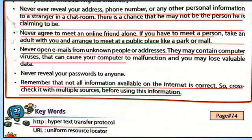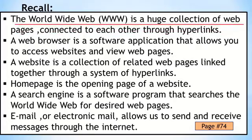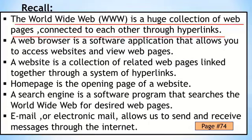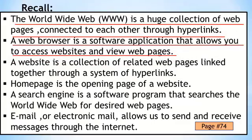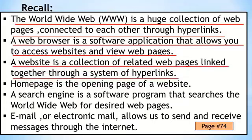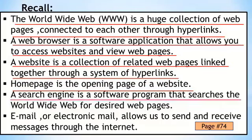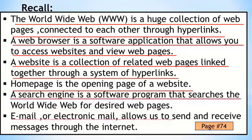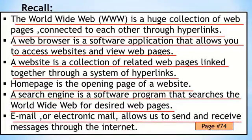Now we are going to create keywords. The first keyword is HTTP, which means HyperText Transfer Protocol. The next keyword is URL, which means Uniform Resource Locator. Recap: the World Wide Web (WWW) is a huge collection of web pages connected through hyperlinks. A web browser allows you to access websites. A website is a collection of related web pages. A search engine searches the web for desired pages. Email allows us to send and receive messages through the internet.